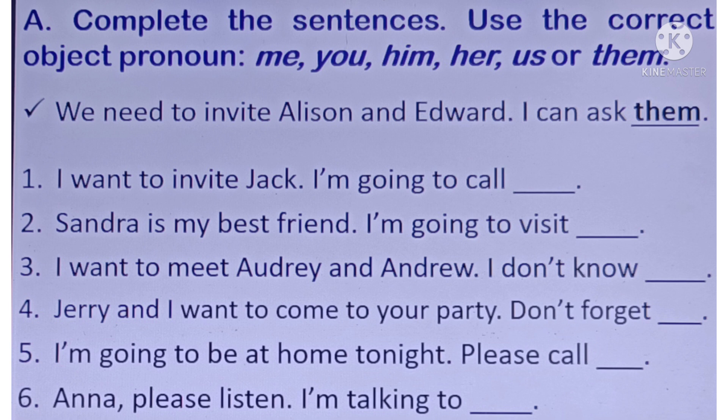Example: 'We need to invite Alison and Edward — I can ask them.' Number one: 'I want to invite Jack. I'm going to call ___.' Number two: 'Sandra is my best friend. I'm going to visit ___.' Number three: 'I want to meet Aubrey and Andrew. I don't know ___.' Number four: 'Jerry and I want to come to your party. Don't forget ___.' Number five: 'I'm going to be at home tonight. Please call ___.' Number six: 'Anna, please listen. I'm talking to ___.'